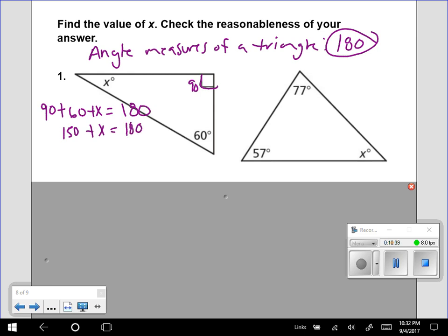Now I need to get x by itself. I have a positive 150 here. So I'm going to subtract 150 from both sides. Inverse operation there.